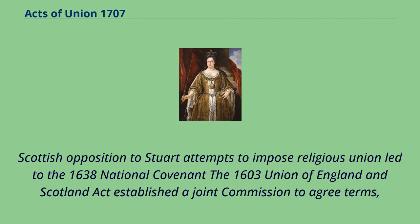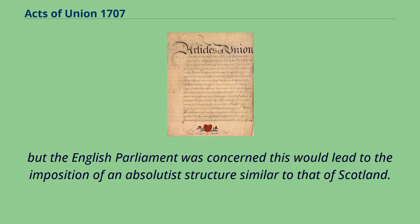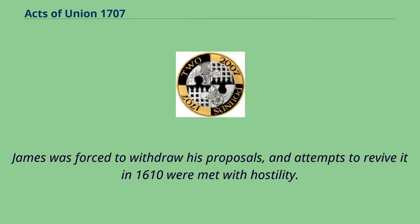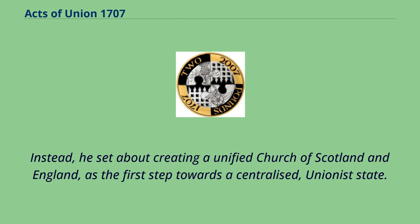Scottish opposition to Stuart attempts to impose religious union led to the 1638 National Covenant. The 1603 Union of England and Scotland Act established a joint commission to agree terms, but the English Parliament was concerned this would lead to the imposition of an absolutist structure similar to that of Scotland. James was forced to withdraw his proposals, and attempts to revive it in 1610 were met with hostility. Instead, he set about creating a unified Church of Scotland and England as the first step towards a centralized, unionist state.